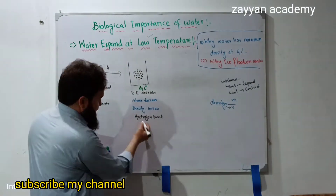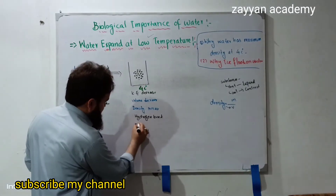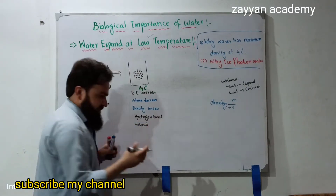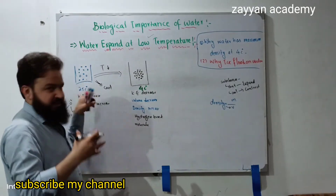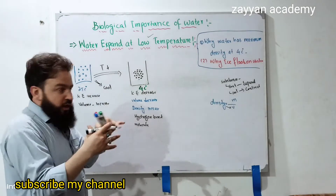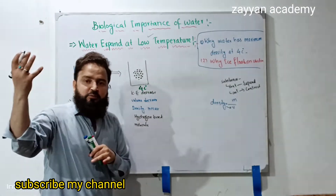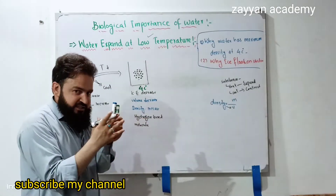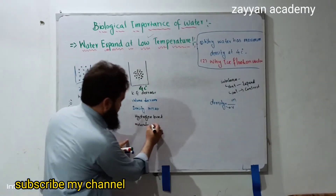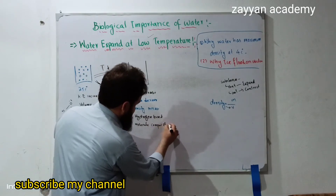If you have a molecule, you can consider one molecule at 20 or 25 degrees centigrade. If you don't cool it down or add kinetic energy, you can add hydrogen to that molecule. The molecule is compactly arranged.